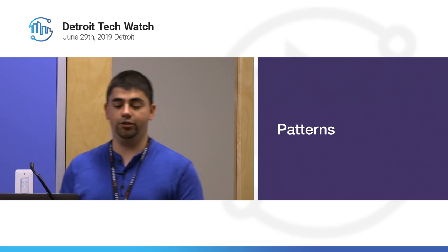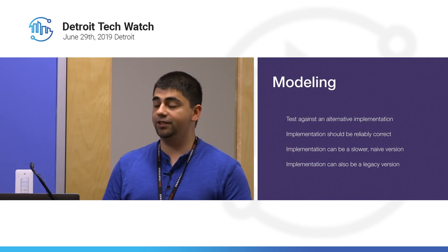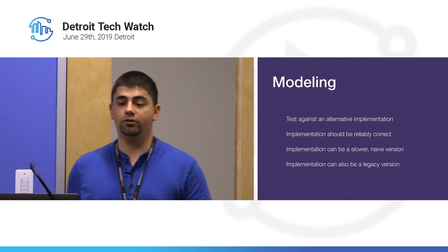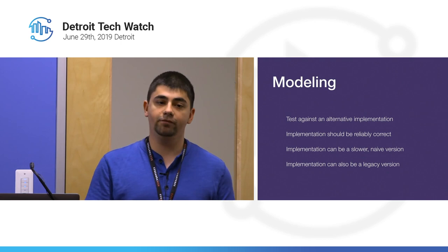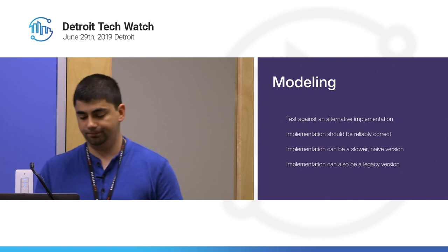Luckily, there are patterns to help you get started — you really need to change your mindset for property-based testing. The first pattern is modeling: you test against an alternative implementation. The implementation should be reliably correct, and could be a slower, more naive version, or a legacy version. If you're refactoring something, you could test against the legacy version to ensure your new version is at least as correct as the old one.